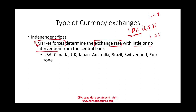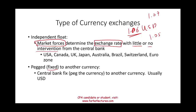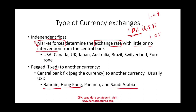The second type is a fixed or pegged exchange rate, where a currency is pegged to another currency — usually the US dollar. If the US dollar goes up in value, their currency goes up; if it goes down, their currency goes down. Countries with pegged currencies include Saudi Arabia, Bahrain, Hong Kong, and Panama.